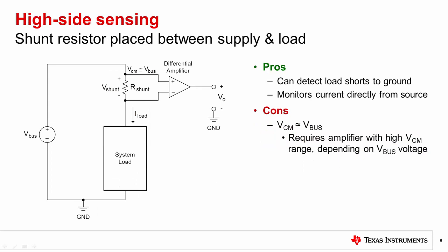A high side implementation has the shunt resistor placed between the supply voltage and the load, resulting in the common mode voltage being essentially equal to the bus voltage. This allows for the system to not have any ground disturbance and to identify ground shorts. But depending on the system voltage, the system may require an amplifier with very high common mode voltage capability.